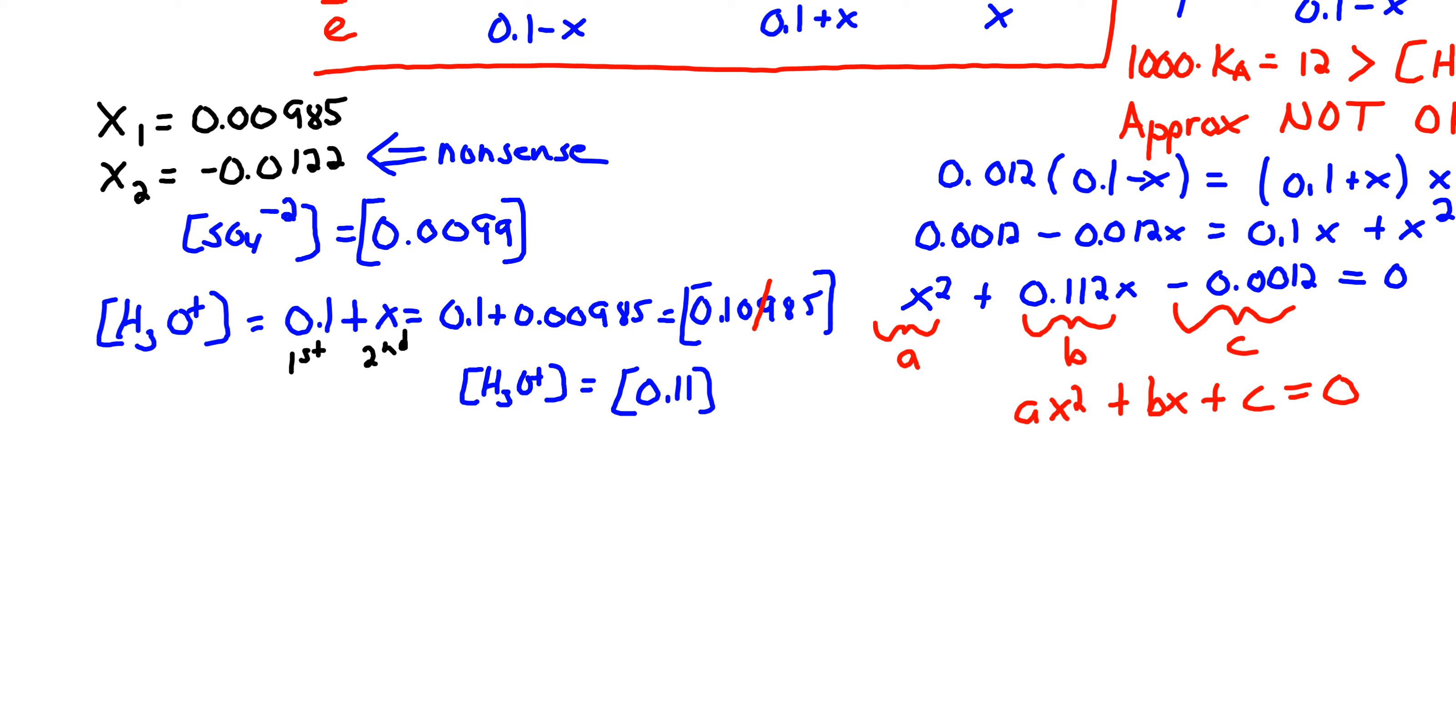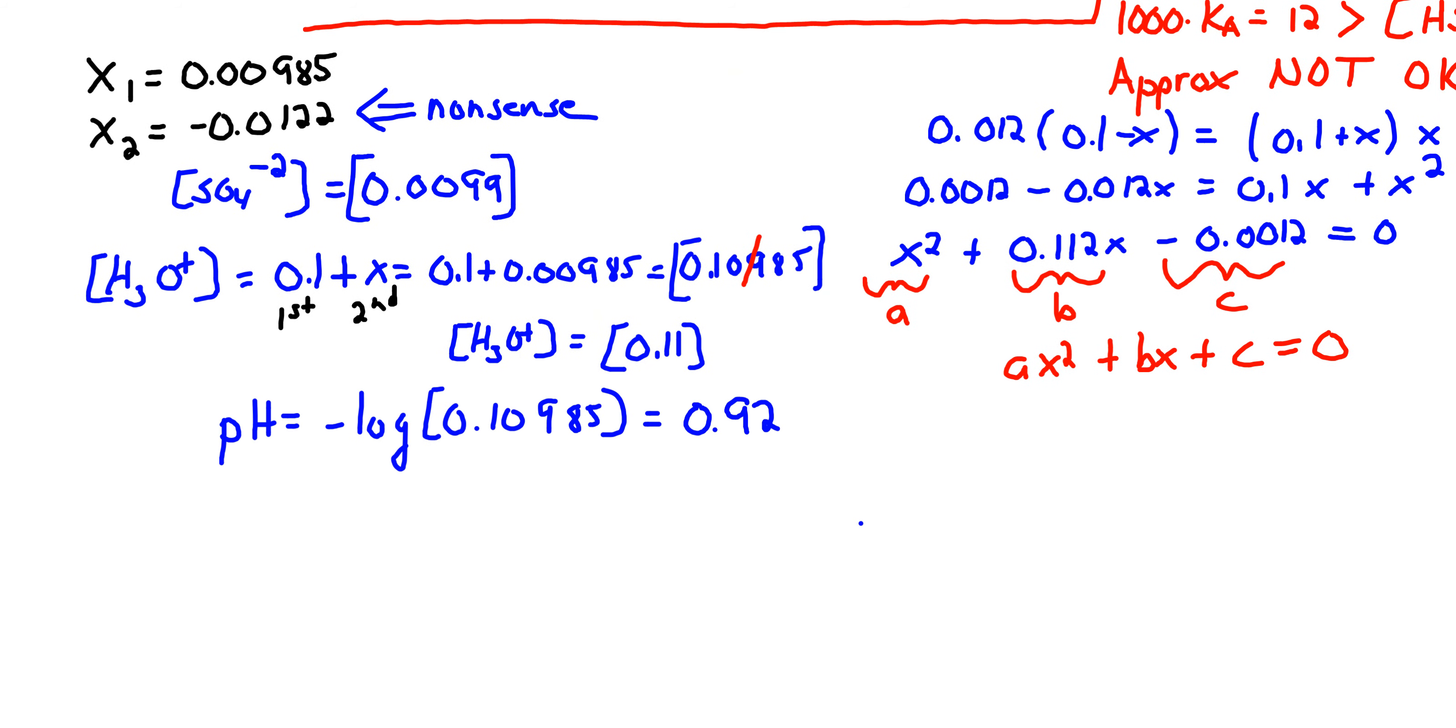It raises the H3O+ concentration slightly, and we can calculate the pH as 0.92. The second dissociation makes the solution slightly more acidic. Finally, we can calculate the equilibrium concentration of HSO4-, and that's it.